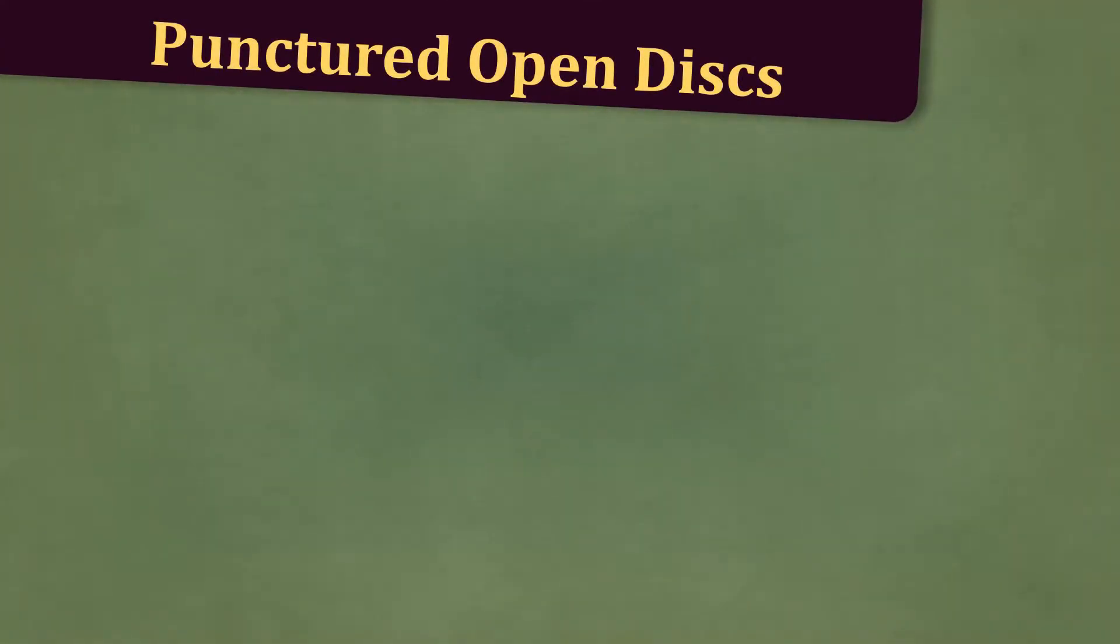First, let's recall what punctured open sets are. We have that d dash of a and r is equal to d of a and r without a, which is the punctured open disk of centre a and radius r.